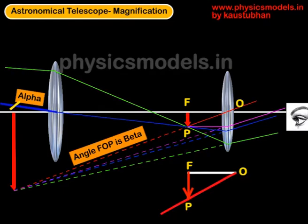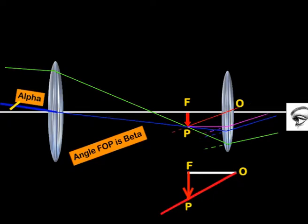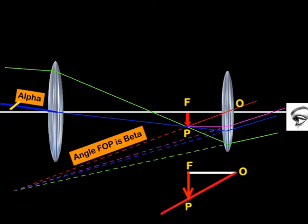Looking at the triangle which we are focusing here, the angle subtended by the intermediate image and the final image with the center of the eyepiece, which is O, is angle FOP, where FP is the focal plane for the intermediate image.